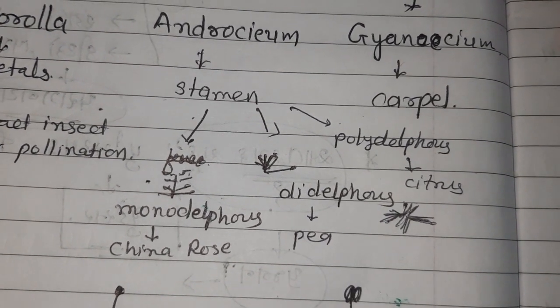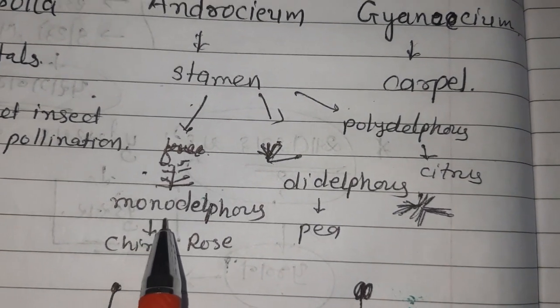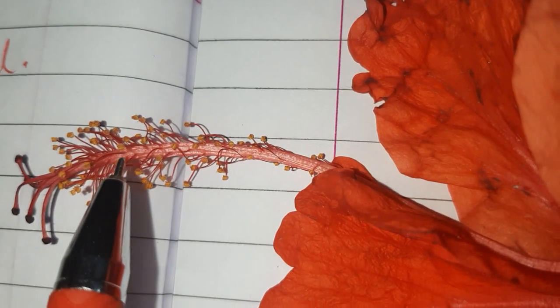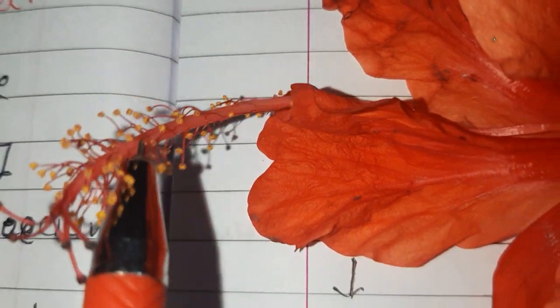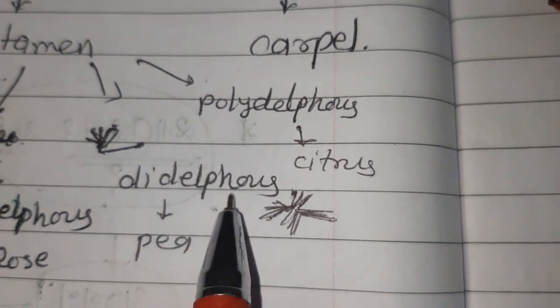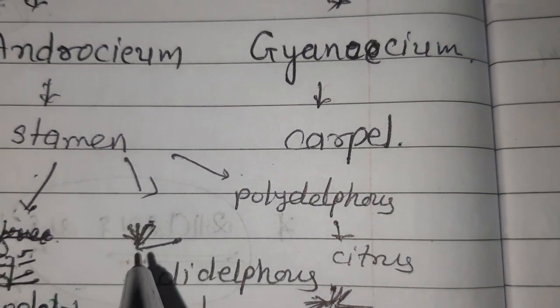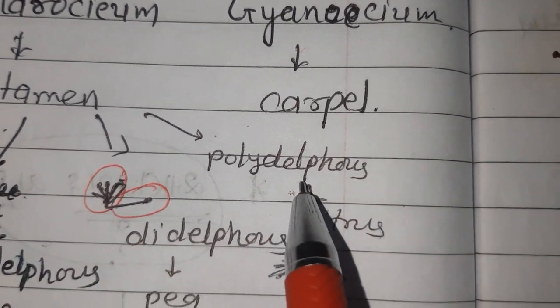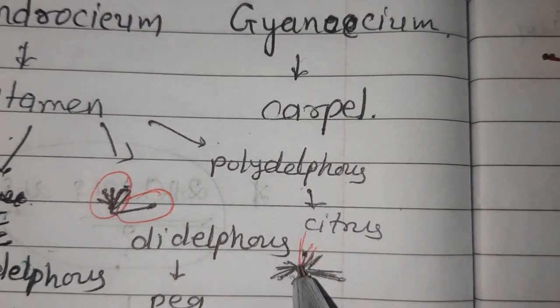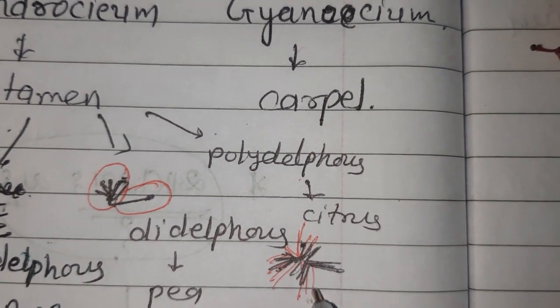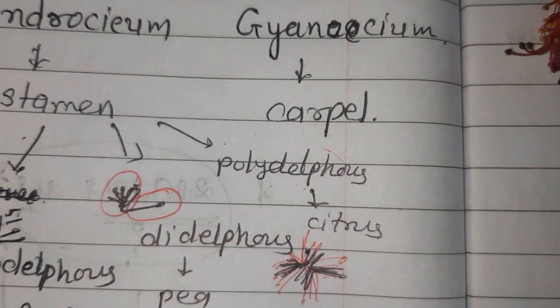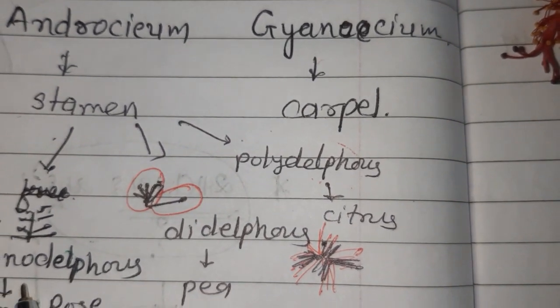If they are united by one bunch, they are known as monodelphous. Example is China rose. These stamens are united in one group, that's why it is monodelphous. Second type is diadelphous, example is pea. Stamens are present in two groups, nine plus one. Third is polydelphous, example citrus, when the stamens are arranged in more than three, four, or five bunches.